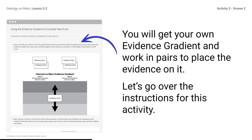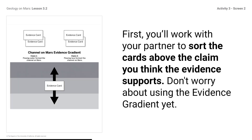You will get your own evidence gradient and work in pairs to place the evidence on it. When scientists get new evidence in the course of investigation, they reconsider the claims and other evidence to think about how they fit it all together. Although the latest evidence is very convincing and supports the flowing water claim, it is important to still acknowledge the flowing lava claim and consider the evidence for it. Scientists go through similar processes when considering how different channels on Mars formed, because there are volcanoes on Mars. First, you will work with your partner to sort the cards above the claim you think the evidence supports. Don't worry about using the evidence gradient yet. If you have a card that supports both claims, you can place it in the middle of the gradient on the arrow.